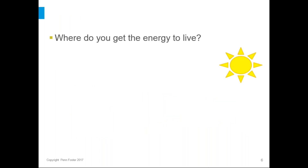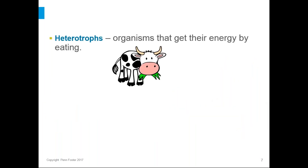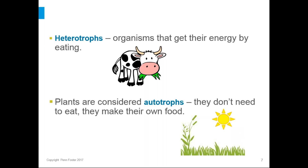So where do you get the energy that you need to live? You get it from the food that you eat. If you're eating meat, the animal you're eating has energy stored in its cells, which it got from eating plants. The plants stored energy in their cells, and they got that energy from sunlight. Both you and the animal are considered heterotrophs — organisms that get their energy by eating. Plants are considered autotrophs; they don't need to eat, they make their own food. All the energy we get starts with the sun, is stored by plants, and then moves up the food chain.